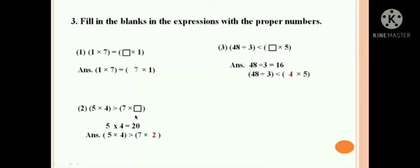The second is 5 into 4 is greater than 7 into dash. Now 5 fours are 20, so you have to put a number smaller than 20. When you multiply 7 with 2, you get 14. So your answer should be 7 into 2.